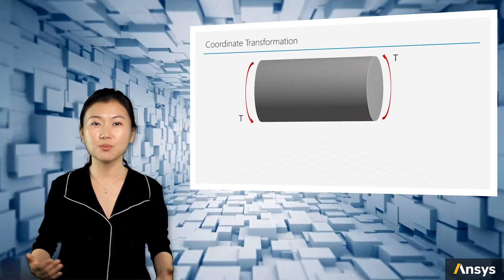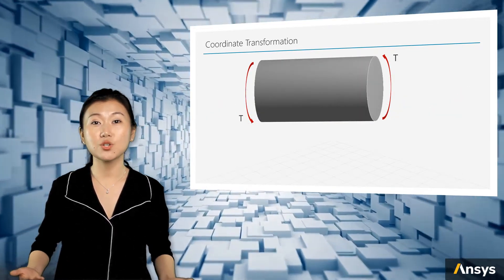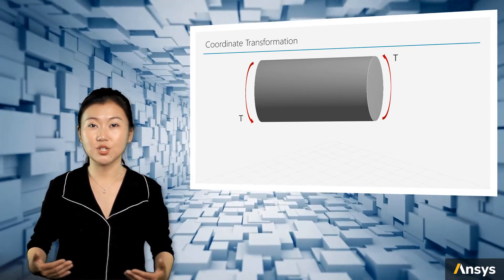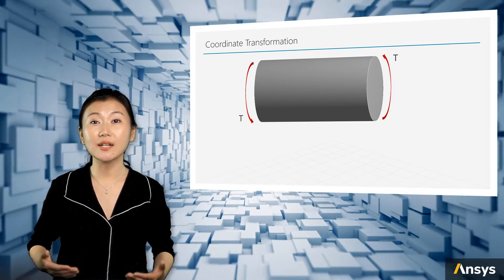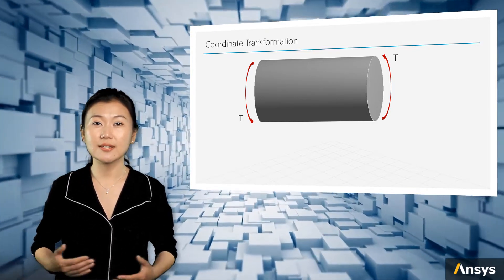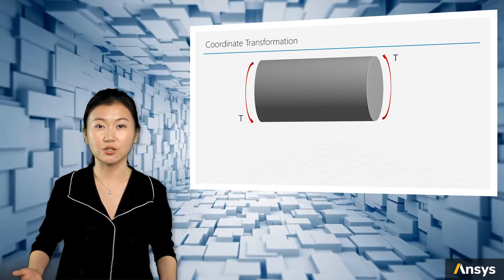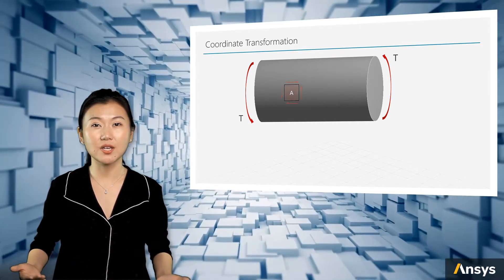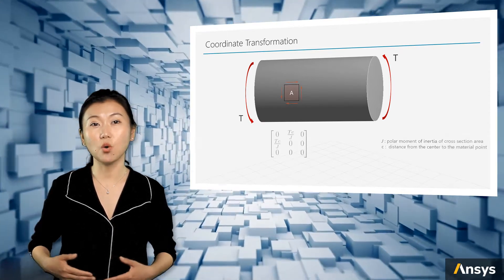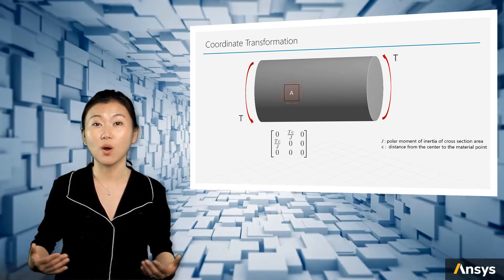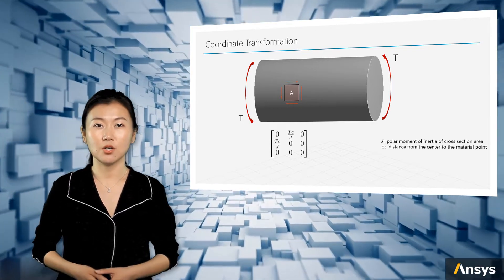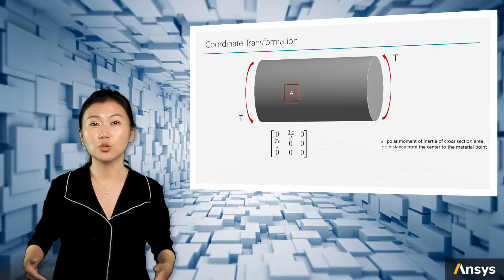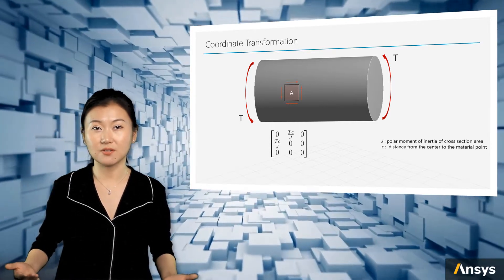Let's have a look at this simple torsion bar problem. A pair of torsional forces are applied to the ends of the bar. The stress state is uniform along the axis, which means if we cut the bar at any location, the stress distribution over the cross-section will always be the same. If we pick an infinitesimal cube at position A on the bar, the stress state will only have values for the xy and yx components as shear stresses. We say the material is in pure shear under such torsional loads, so no normal stress value exists for the stress tensor.